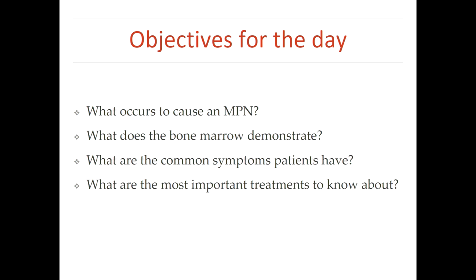My goal is to talk about the biology, what's happening in the bone marrow, and to try to explain the clinical impacts on patients. We're going to talk about what causes a myeloproliferative neoplasm — whether that's polycythemia vera, myelofibrosis, or essential thrombocytemia. We'll look at bone marrow pictures, see how we diagnose these diseases, cover common symptoms, and do an overview of how you decide on treatments.